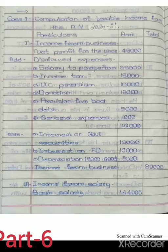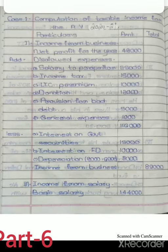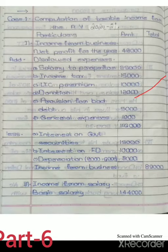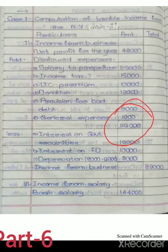Add all disallowed expenses — expenses not related to the business. Salary to proprietor, 25,000, is a disallowed expense, not a business expense — add back. Income tax, 15,000, is not allowed. LIC premium is also personal — disallowed. Donation, 12,000, is also treated as personal — disallowed. All kinds of provisions are disallowed, so provision for bad debts 5,000 is disallowed. General expenses — personal motor car use — 1,000 is disallowed. After adding all these, the total amount is 1,16,000.